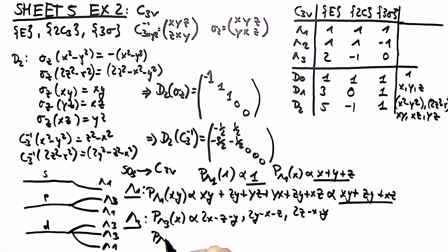Next step is we take x squared minus y squared. And a short calculation yields that this is again x squared minus y squared. And 2z squared minus r squared stay in the same irreducible representation as well.